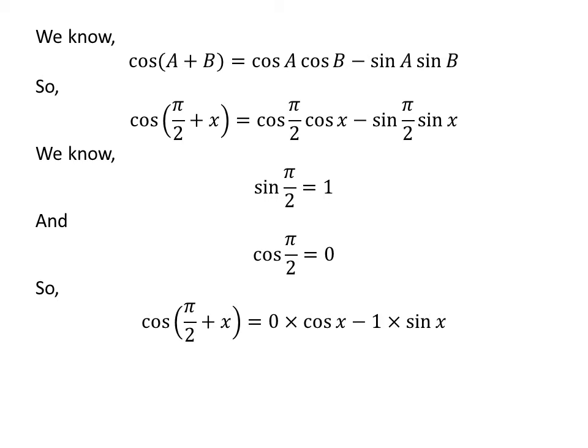So, we get cosine of half of pi plus x is equal to 0 times cosine of x minus 1 times sine of x. As 0 times cosine of x is equal to 0 and 1 times sine of x is equal to sine of x, cosine of half of pi plus x is equal to 0 minus sine of x, which is equal to minus sine of x. So, the value of cosine of half of pi plus x is equal to minus sine of x.